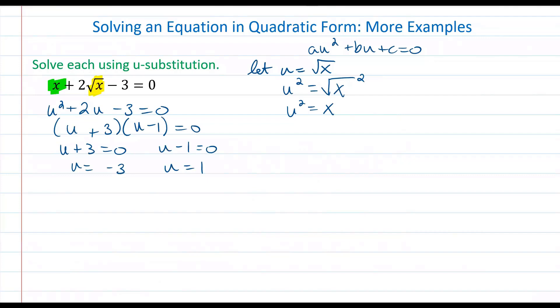Well now, and don't forget that we solved for u, but we want to solve for x. So we need to replace u with what we decided, what we determined earlier on, that u is equal to. So we're going to replace u with the square root of x and solve these two equations.